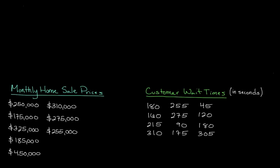In this video, we're going to talk about the most common measure of central tendency, the arithmetic mean. As a measure of central tendency, the mean is designed to help us determine the midpoint of a dataset. The mean comes in two forms: we have a population mean and a sample mean.